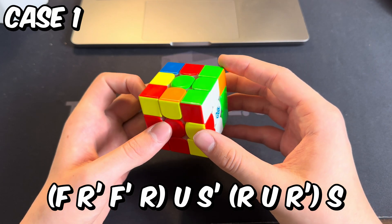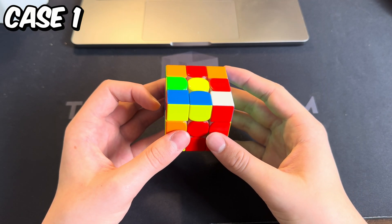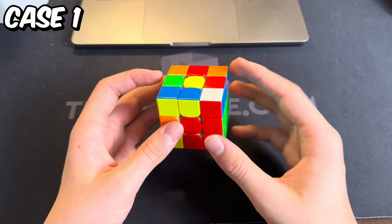...you do an S move, insert the pair, and then another S move just like before. I won't be showing the lefty cases, so make sure you can mirror the algorithm to both sides.